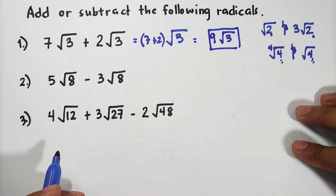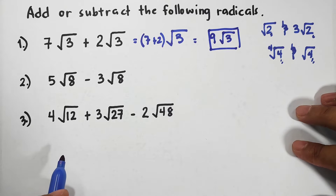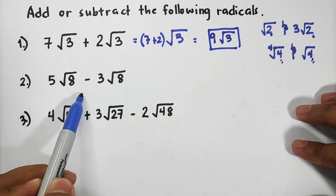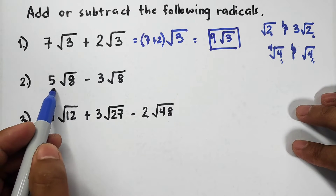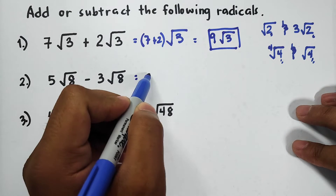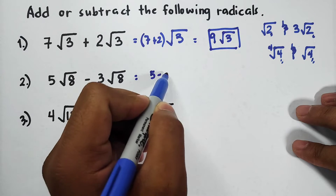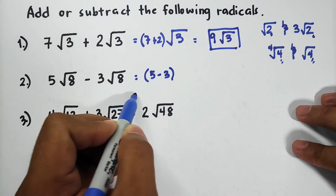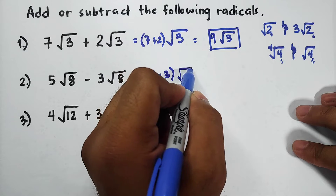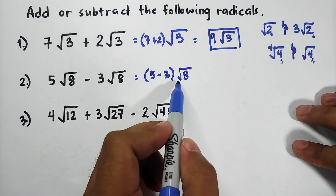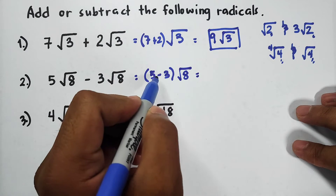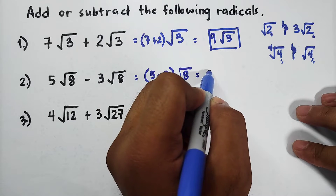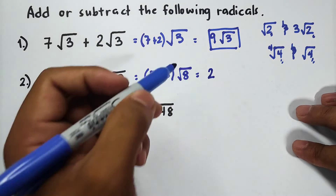For number 2, these are obviously similar radicals. What we need to do is subtract the coefficients: 5 minus 3. Copy the similar radical, which is √8. So we get 5 − 3 = 2, giving us 2√8. But we cannot declare this as the final answer yet, because we can still simplify √8.